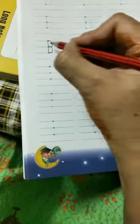It's like a semicircle. One semicircle and then another semicircle. And this is letter B.